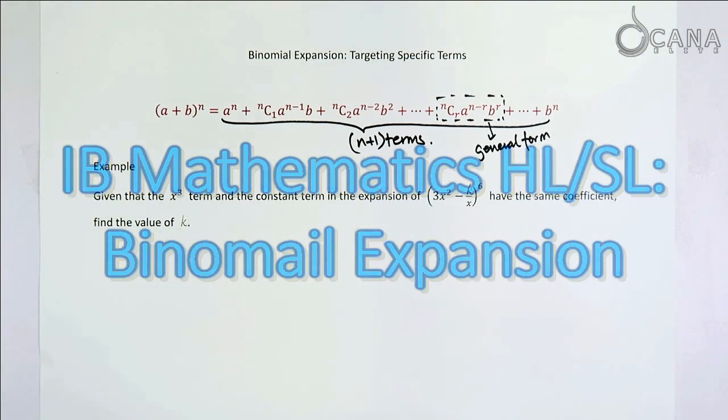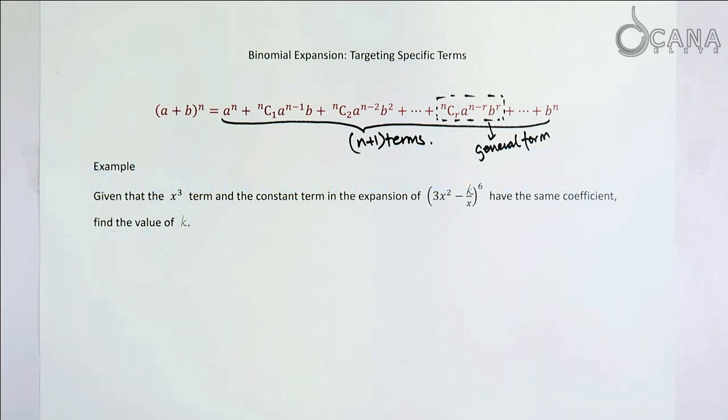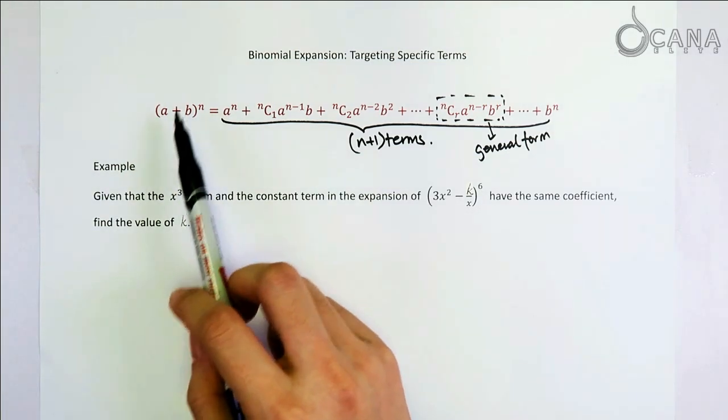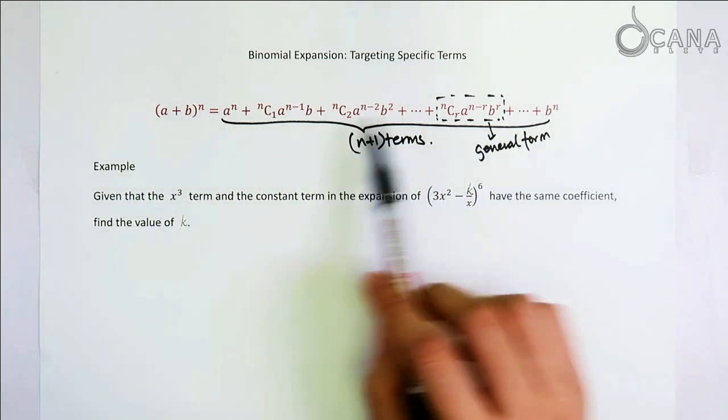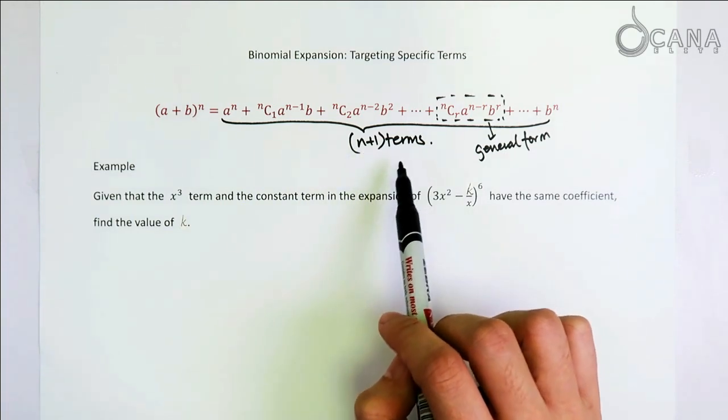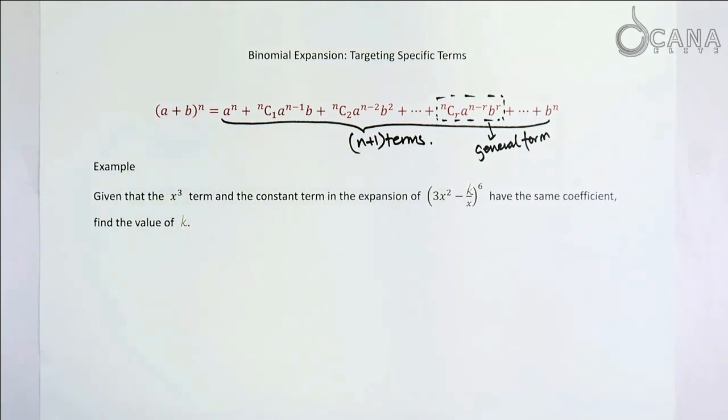In this video, we're going to talk about how to find a very specific term in a binomial expansion. We know that when we're trying to expand this bracket, following this formula here, there will be n plus one terms in the entire expansion of this bracket.